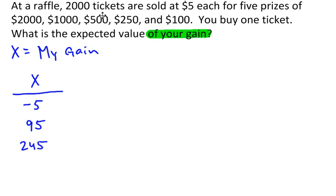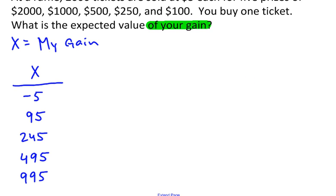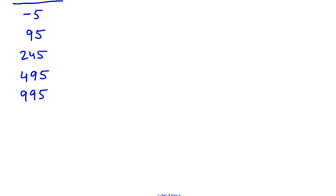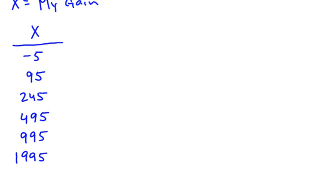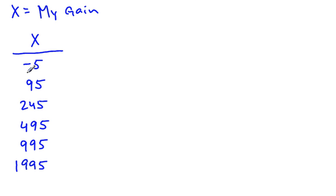If I buy a ticket and I win the $500 prize, my gain is $495. And if I win the $1,000 prize, my gain is $995. And if I happen to win the grand prize of $2,000, my gain is going to be $1,995. So that's all the possible outcomes for my random variable.